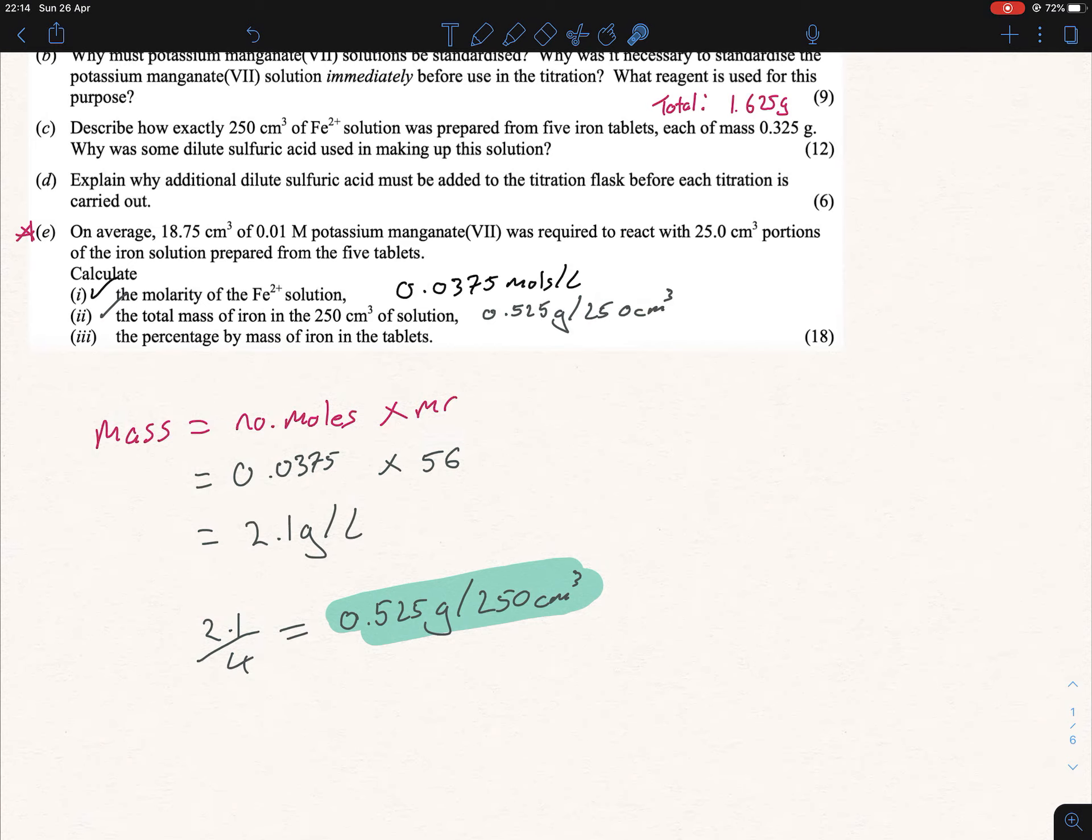If you're not sure whether to divide by four or multiply by four, ask yourself this: if there's 2.1 grams in a liter, how many grams will there be in 250 cm³? That's obviously going to be a lot less, because you're reducing the volume. If you reduce the volume, you've reduced the mass. Therefore, if you had multiplied this, you would have got a lot more than 2.1, so you could have figured out that's obviously not the way to go about it.